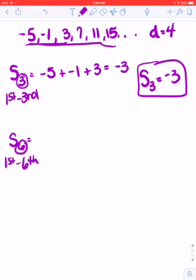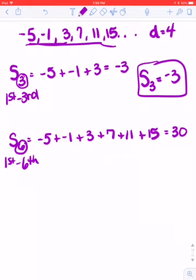So to do my sum, it's going to be negative 5 plus negative 1 plus 3 plus 7 plus 11 plus 15. And then I'm just going to go through and total those. So I'm going to have a total of 30. So that means that S sub 6 is going to be 30.